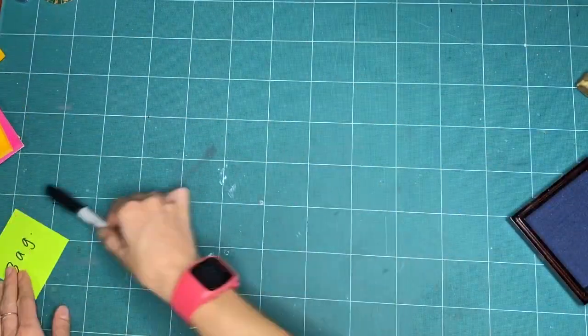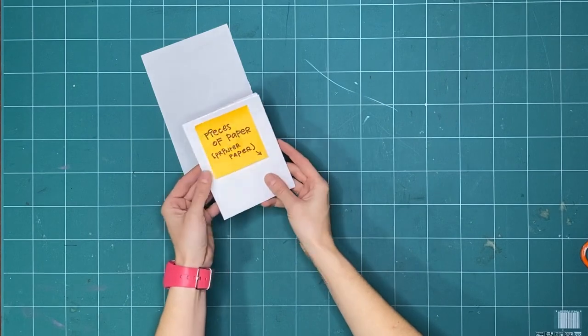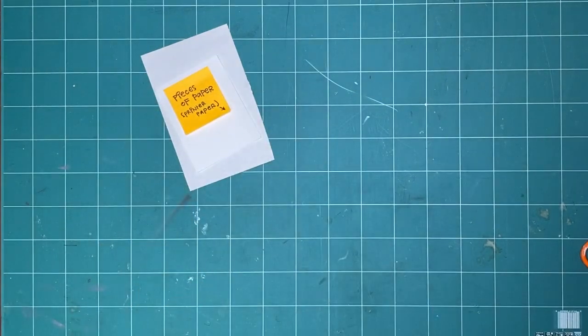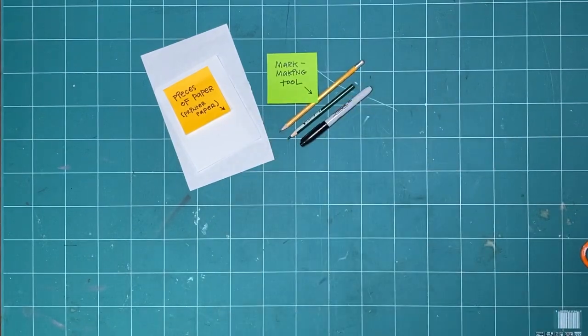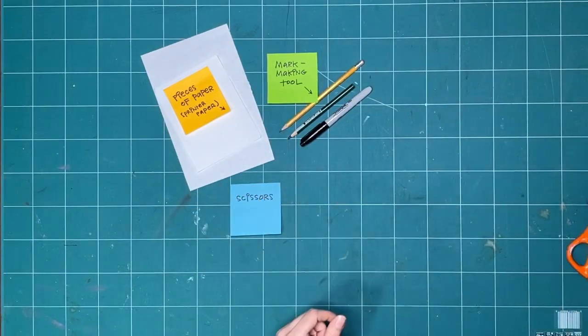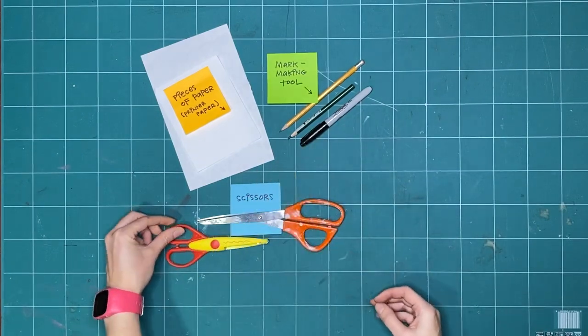With our imaginary bags filled with letters, let's also get the following things ready. Some pieces of paper. I like to use recycled printer paper. It doesn't matter if there's printing on the back. A mark making tool. Some scissors. And finally, reach into your imaginary alphabet bag and pull out your favorite letter.